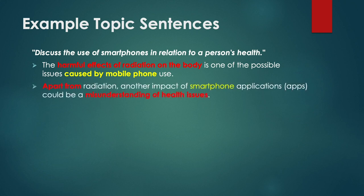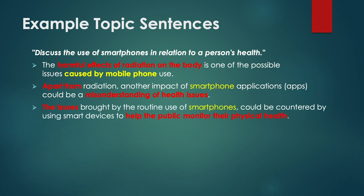In the second paragraph we have 'apart from radiation, another impact' — this means it could be a second problem paragraph — and then 'smartphone applications could be a misunderstanding of health issues.' So this paragraph is about social factors rather than physical impacts, for example getting wrong information from the mobile phone. Looking at the third sentence, 'could be countered' means a solution, so this paragraph will be looking at solutions for mobile phone use.